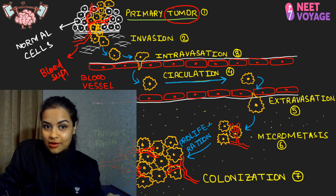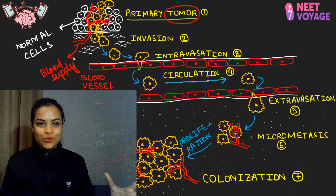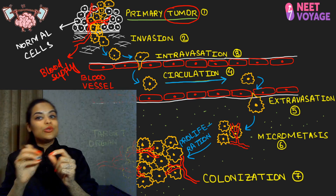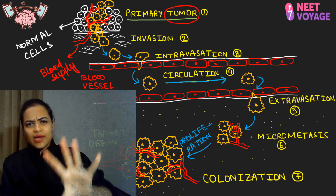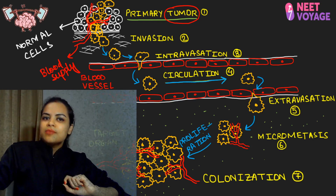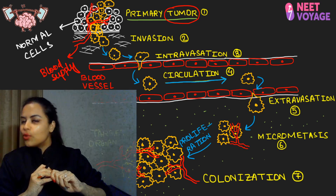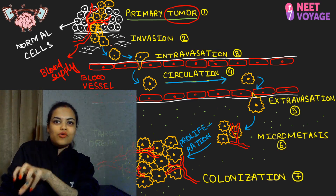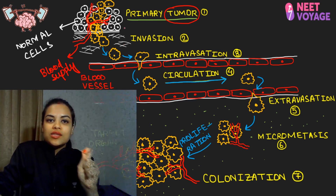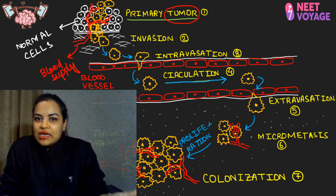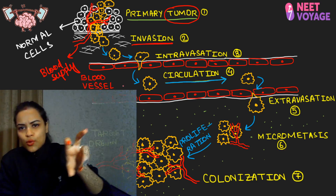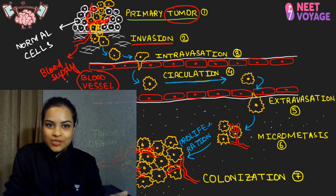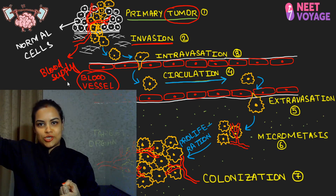The tumor needs nutrition, so it creates its own blood supply — this process is called angiogenesis, meaning blood vessel formation. So the tumor is settled at one place. Then suddenly some cells shed off from the primary tumor, separate from it, leave their location, and invade into someone else's territory — this is called invasion. Moving around, the cells find a highway — the blood vessel — and enter it. This entry into a blood vessel is called intravasation.